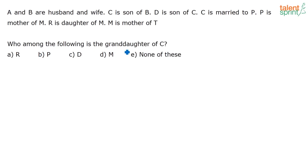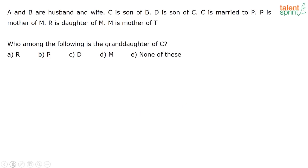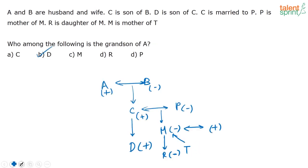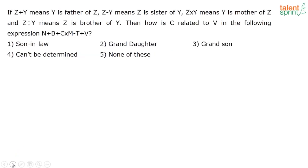Who is the granddaughter of C? C's grandchildren are in the generation two levels below C. R is female, so R is the granddaughter of C. T's gender is unknown, so the answer for the granddaughter of C is R, which is option A.